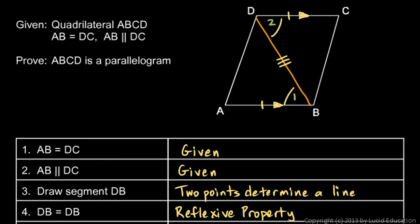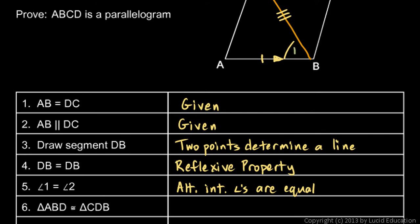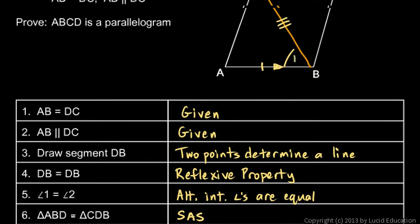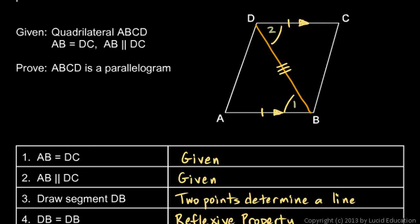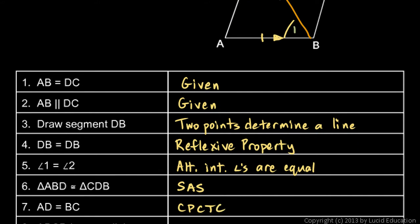Now look at the two triangles: triangle ABD is congruent to triangle CDB by side-angle-side, or SAS. Once those triangles are congruent, we know that side AD must equal side BC, because corresponding parts of congruent triangles are congruent.